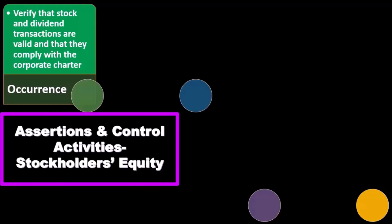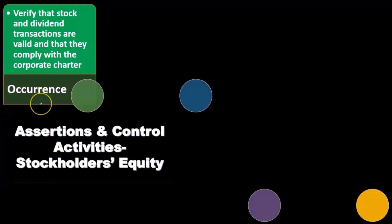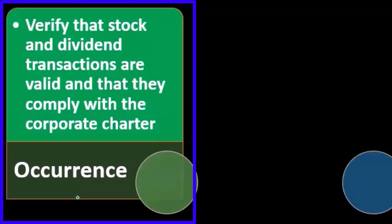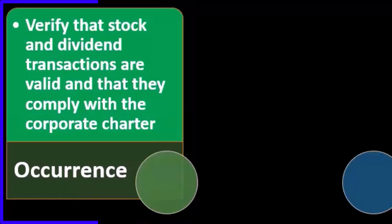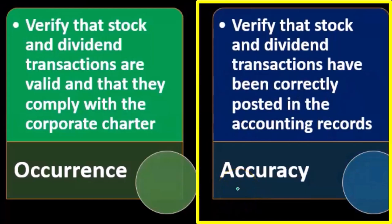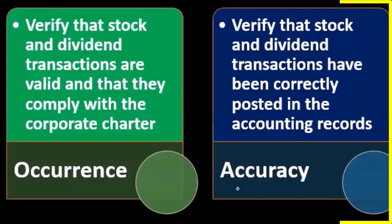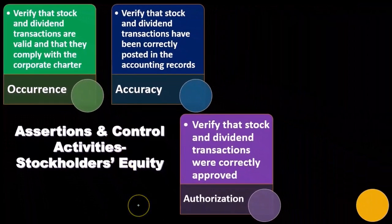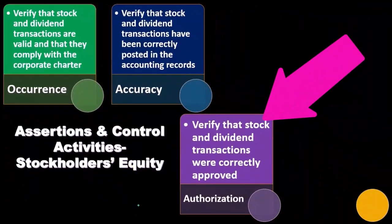The audit activities related to stockholders' equity begin with the assertion of occurrence: verify that stock and dividend transactions are valid and that they comply with the corporate charter. The next assertion is accuracy: verify that stock and dividend transactions have been correctly posted in the accounting records, ensuring they are recorded in an accurate format.